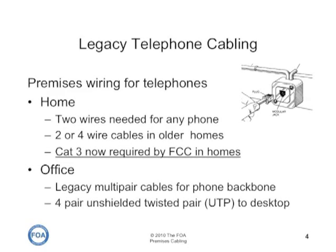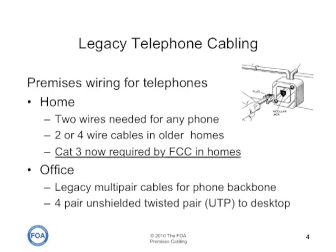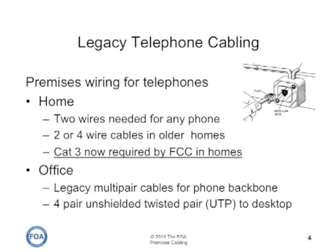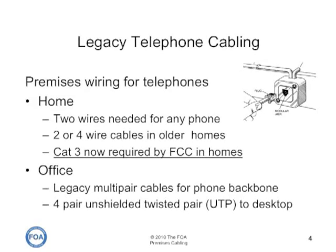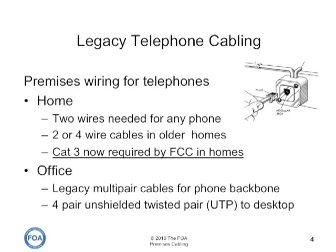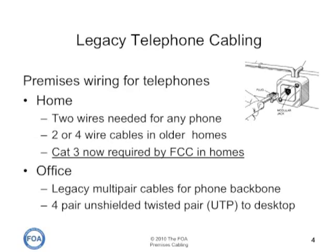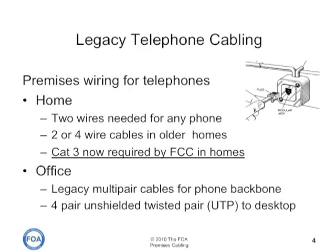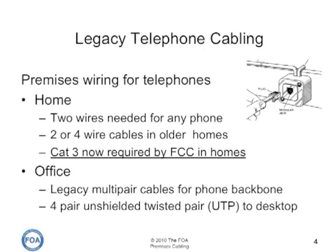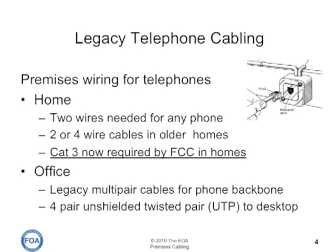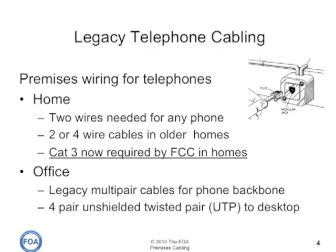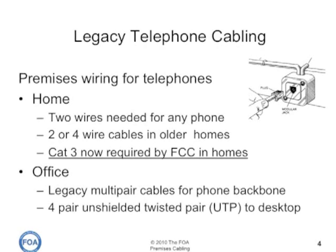Many homes and offices still have legacy cabling installed many years ago for telephones. In the home, there were two wires needed for any phone, so phones typically used two to four wire systems for one or two lines. Category three is typically required by the FCC in all homes. In an office, it was often legacy multi-pair cables — 25 or 50-pair cables used for a phone backbone, or a four-pair unshielded twisted pair cable to the desktop.